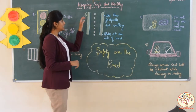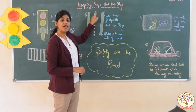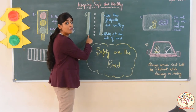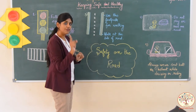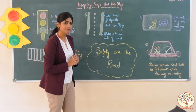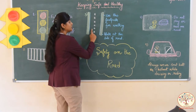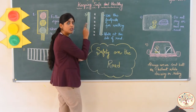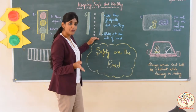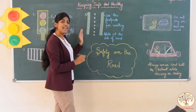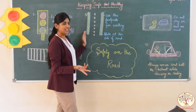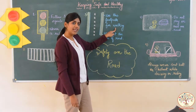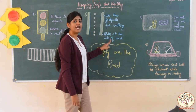Now let's move to the third safety rule. Can you see this is a road? And what is this on the side? It is a footpath. We should never walk in between the road. We should always try to walk on the footpath, or if there is no footpath, we should walk on the side of the road to prevent accidents. So the third rule is: use the footpath for walking and walk at the side of the road.